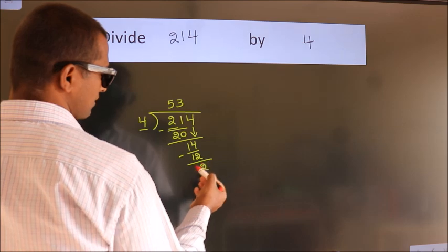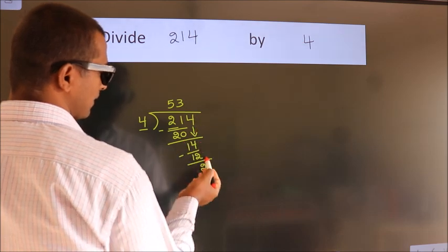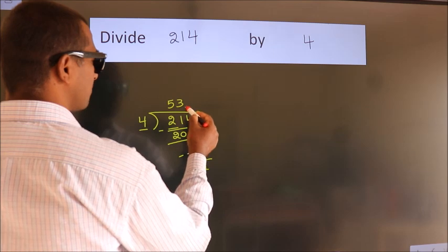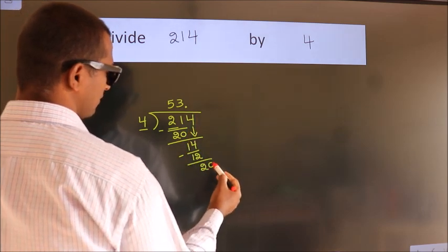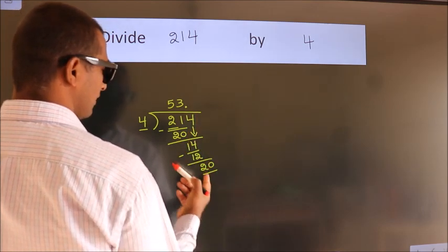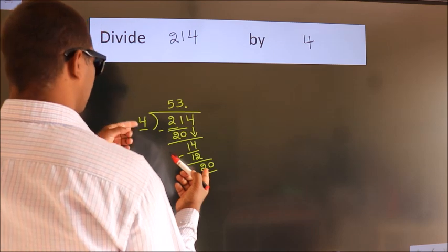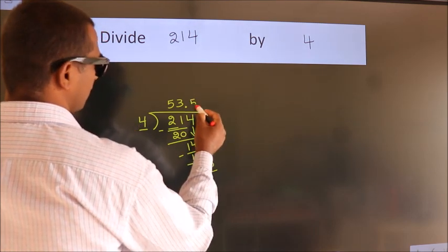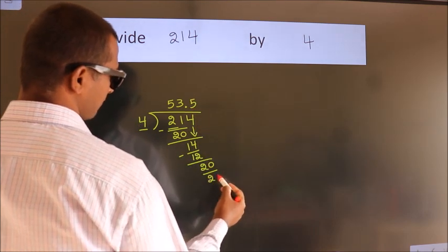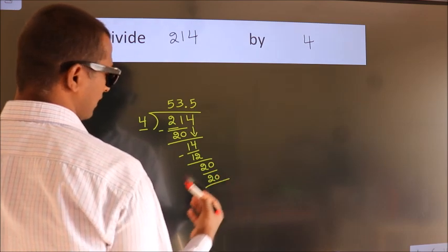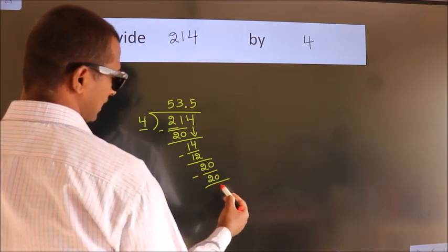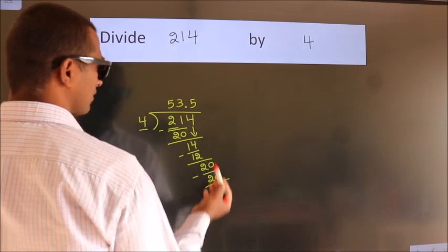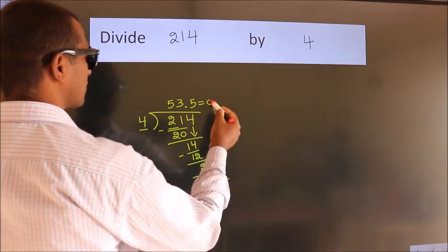After this, no more numbers to bring down, so what we do is we put a dot and take 0, so 20. A number close to 20 in the 4 times table is 4 fives, 20. Now we subtract. We get 0. We got remainder 0. So this is our quotient: 53.5.